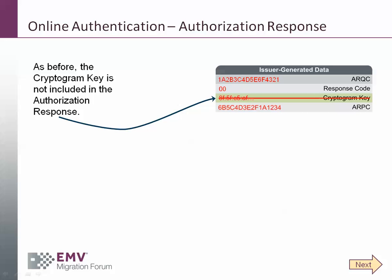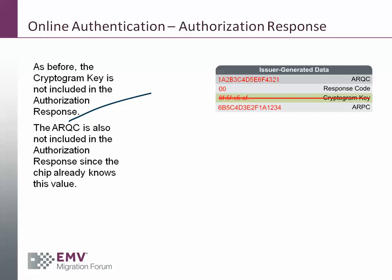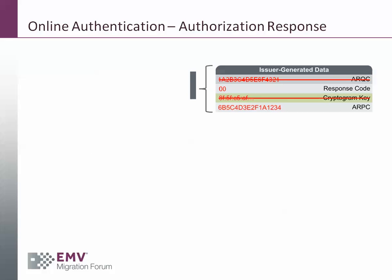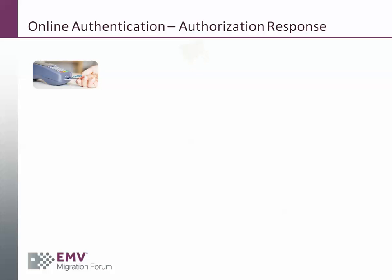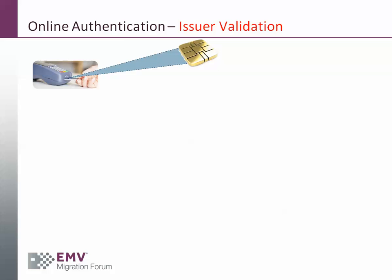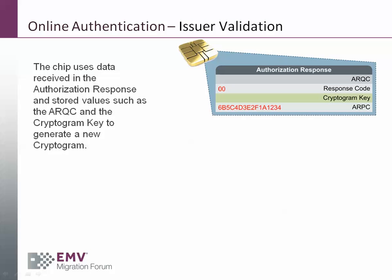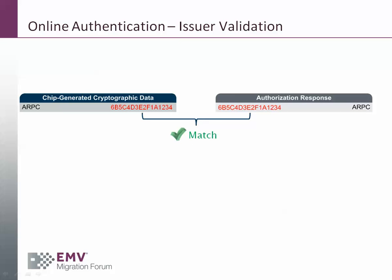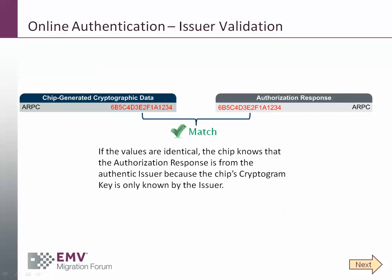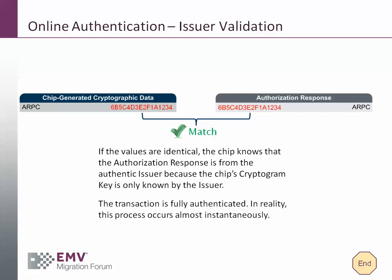The cryptogram key is not included in the authorization response, and the ARQC is also not included, since the chip already knows both of those values. The remaining data elements are included in the authorization response, which is returned to the point of interaction between the chip and the terminal. The chip then wants to validate the issuer. It will populate the ARQC and the cryptogram key — values it already knows — and generate a new cryptogram, known as the chip-generated ARPC. This is compared with the ARPC received in the authorization response. If the values are identical, the chip knows the authorization response is from the authentic issuer, because the chip's cryptogram key is only known by the issuer. At this point, the transaction is fully authenticated. In reality, this process occurs almost instantaneously.